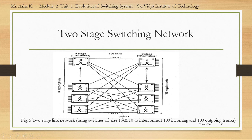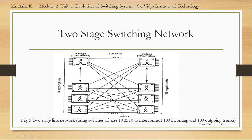In this figure, the number of an outlet on a primary switch corresponds to the number of the secondary switch to which its link goes, and the number of an inlet on a secondary switch corresponds to the number of the primary switch from which its link comes. For example, to understand this link concept, consider link number 23: link 23 corresponds to outlet 3 of primary switch 2, connected to inlet 2 of secondary switch 3.